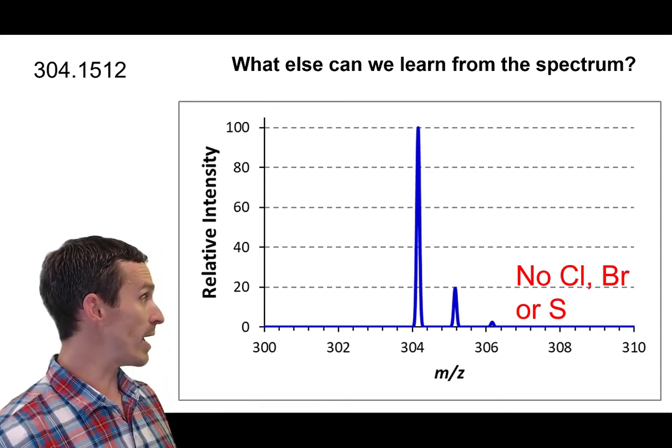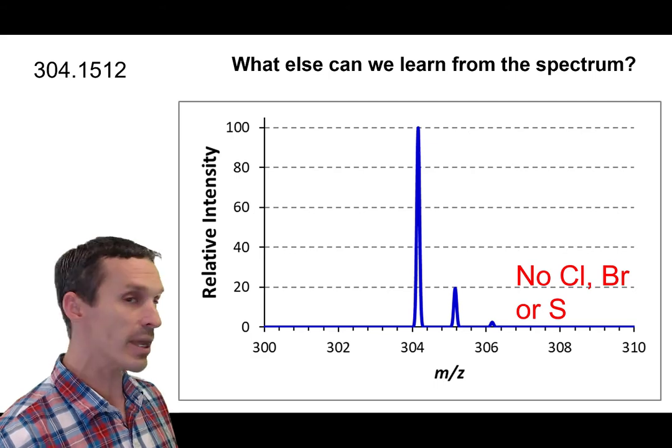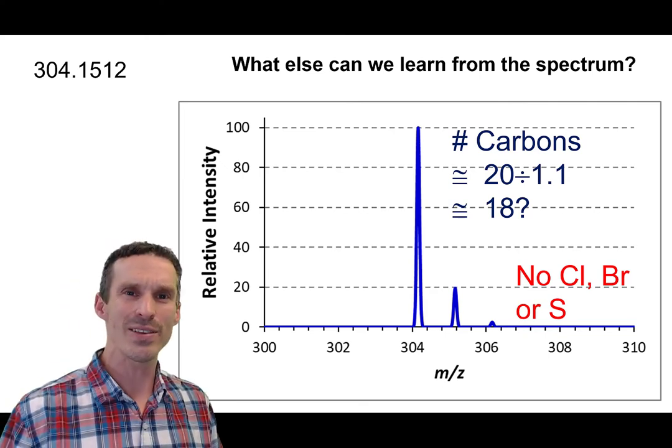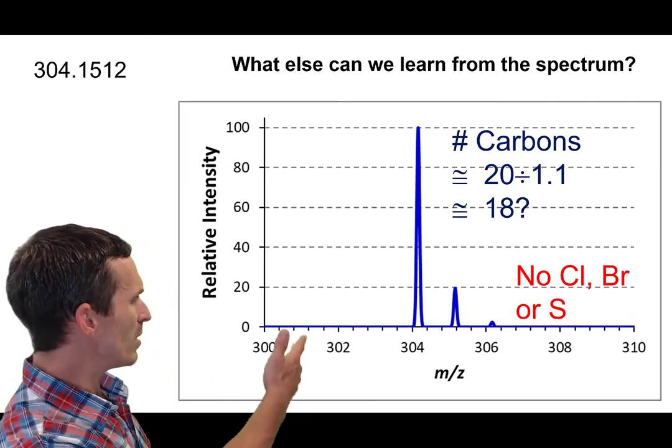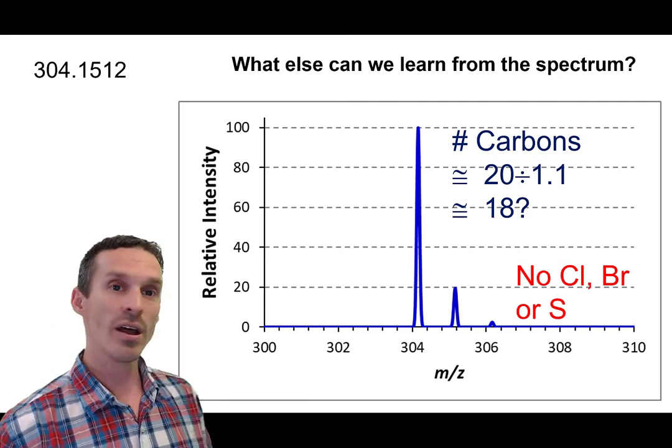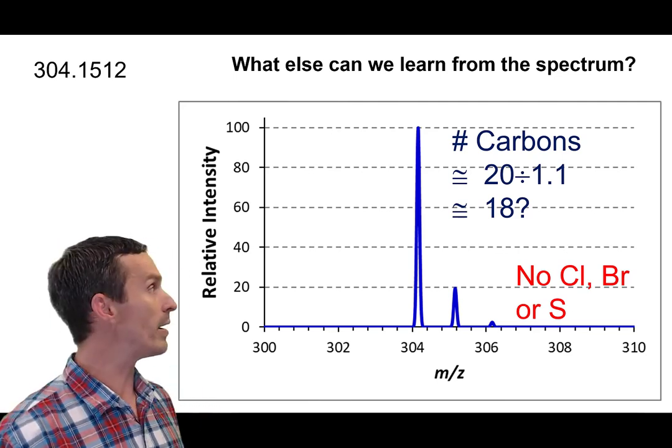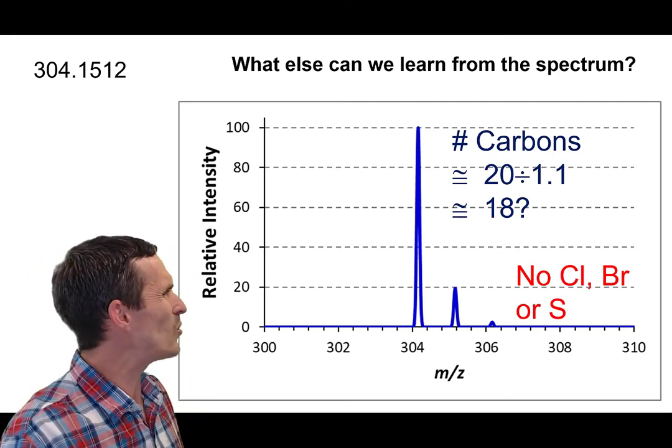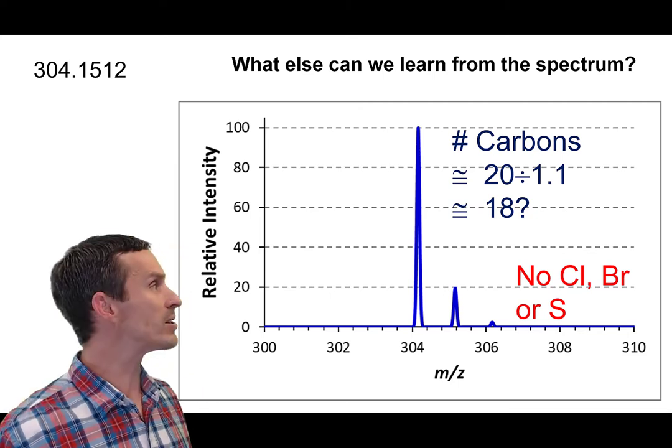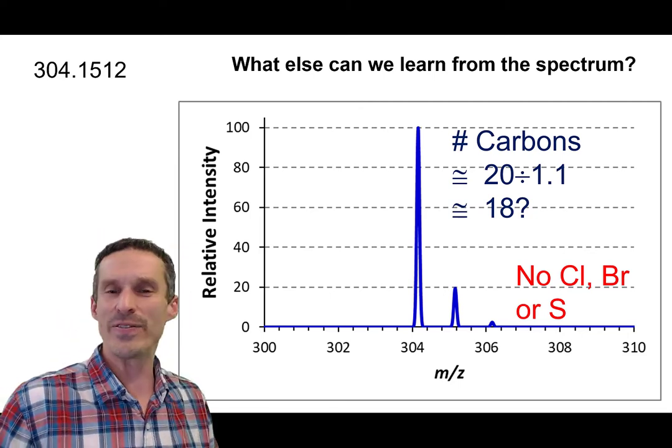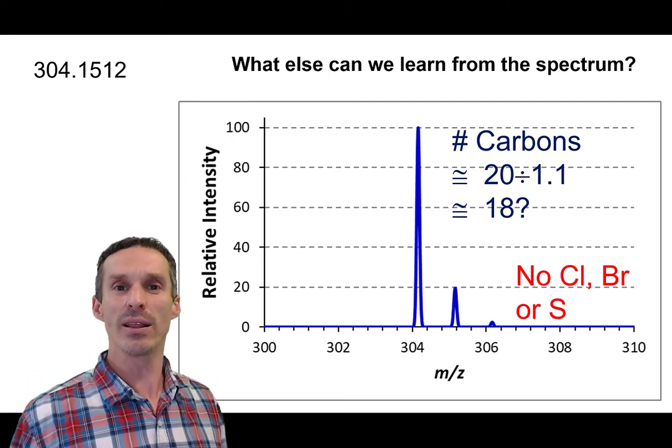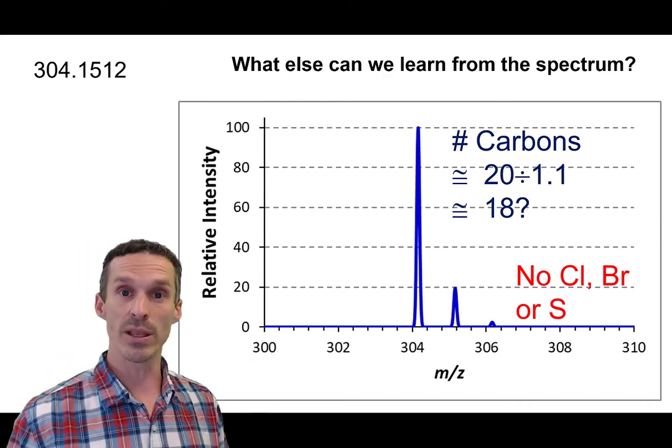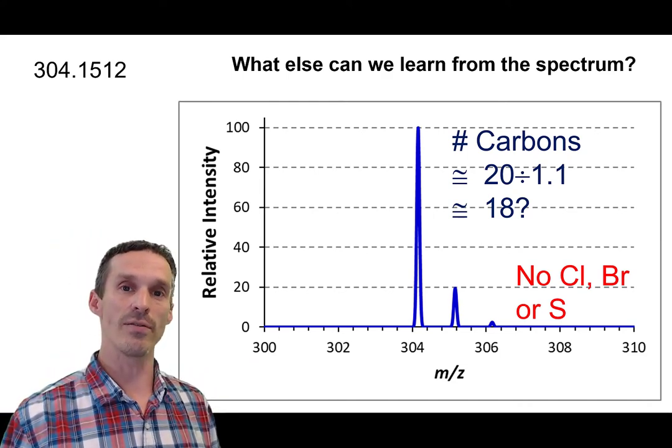All right, what else do we have? Well, if you look at the M+1 isotope, we can get information about the number of carbons. So if we're just saying that it's roughly 20%, it doesn't even matter if it's exactly 20, but just, you know, just eyeballing it, it looks like it's about 20%. And if we just take that number and divide it by 1.1, our shortcut formula for the number of carbons, we get about 18 or so carbons. I'd actually be comfortable to say it's anywhere from like 15 to 20. That's maybe even being a little bit too generous there, but the 20% for the intensity is just a pretty rough estimate. So that's roughly how many carbons we should have in the molecule.